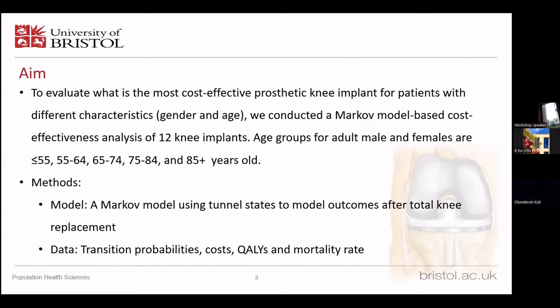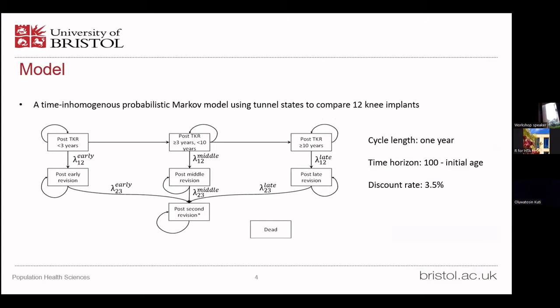To achieve this goal, we used a marker model with internal states to model outcomes after total knee replacement. The data we used are transition probabilities, cost, quality, and mortality rate. The model has three time periods for the patient after total knee replacement: less than three years after primary total knee replacement, from three to ten years, and more than ten years. These are separately named as early, middle, and late.